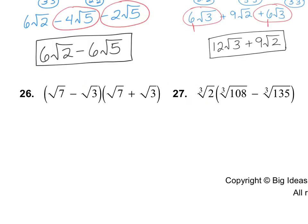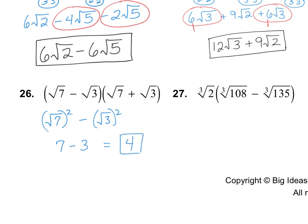Let's take a look at number 26. Hopefully you recognize that this is a difference of two squares — they're both exactly the same except one has a minus sign and the other a plus sign. Following the pattern a² − b², we get (√7)² − (√3)², which gives 7 − 3 = 4.